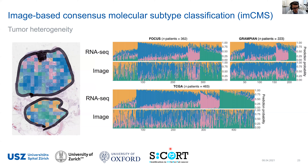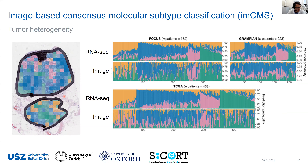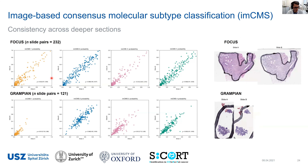We can now resolve tumor heterogeneity in a spatial manner. Using the RNA sequencing data with relaxed thresholds for CMS classification to generate a secondary call for each individual case, you can see the heterogeneous composition of each case depicted in colors, and the image-based representation below correlates with these patterns. This allows us to deeper investigate how these transcriptional subtypes are represented in colorectal tumors and what that means in terms of cellular composition and spatial organization.